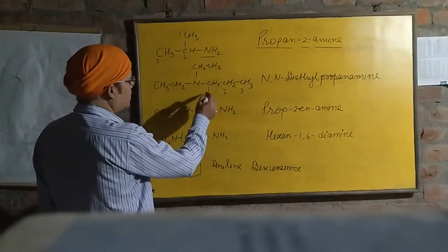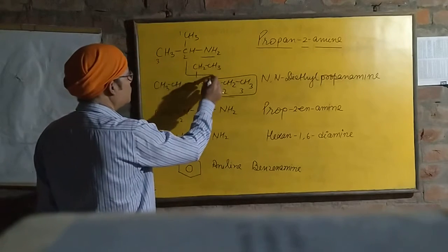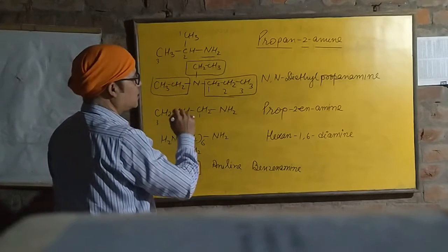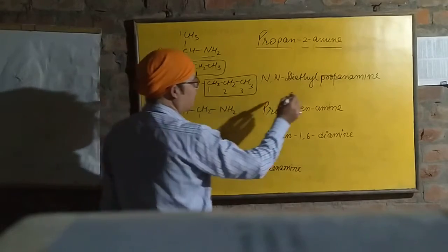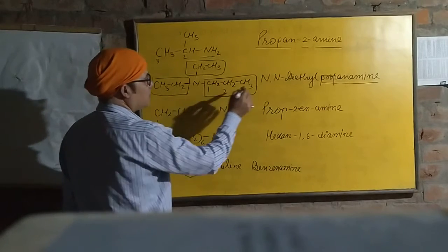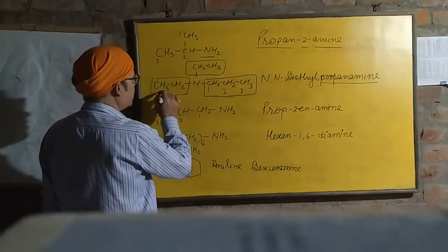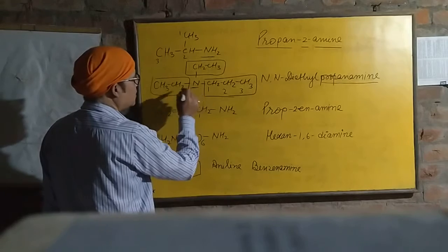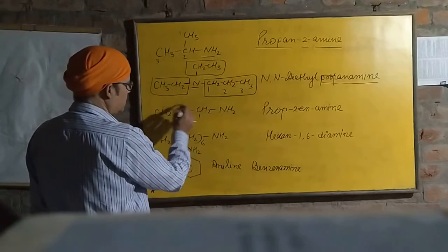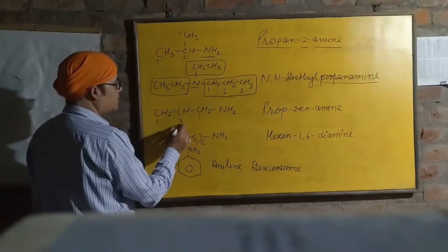Next one is here. The longest chain is of three carbons, and two short chains are attached to the nitrogen. Therefore, the longest chain will be the parent, propane-amine, and the shortest chains will be substituents. Therefore, N,N-diethyl, because diethyls are attached to the nitrogen. Therefore, N,N-diethyl propane-amine.